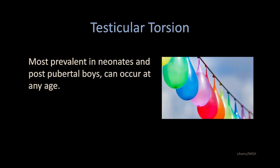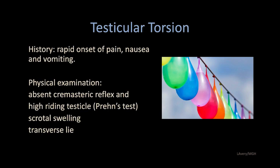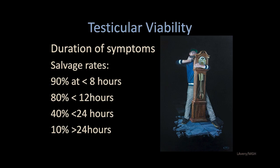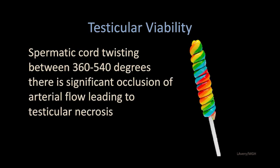Testicular torsion is very common and most common in post-pubertal boys, probably between the ages of 13 and 16, and in neonates. The patient may come in with a classic history of rapid onset of pain, nausea, and vomiting, and classic physical exam findings of an absent cremasteric reflex, high-riding testicle, swollen scrotum, and transverse lie of the testicle. Testicular viability is dependent on the amount of time the testicle is ischemic — if the patient presents to the ER rapidly, the testicle is highly salvageable, but after 24 hours salvageability decreases significantly. The spermatic cord twists between 360 and 540 degrees, with significant occlusion of arterial flow leading to testicular necrosis.